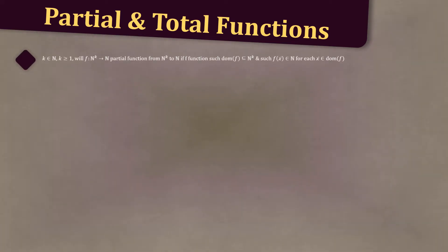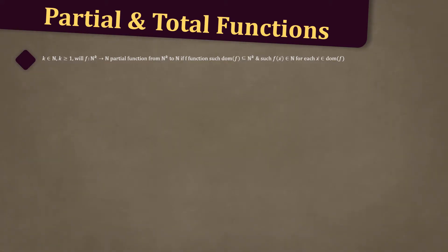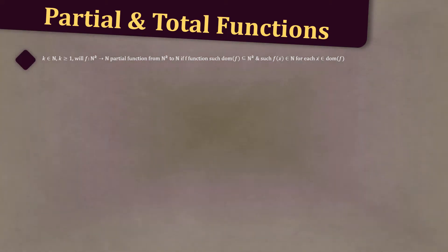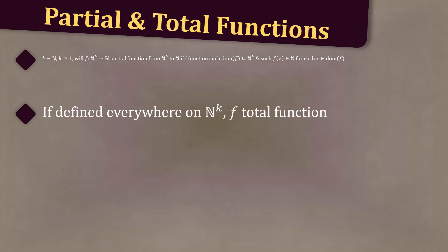Now let's discuss partial and total functions. Given K a natural number greater than 1, we say that F from the natural numbers to the power K to the natural numbers is a partial function if F is a function such that the domain of F is some subset of the natural numbers to the K, and F of X-bar is in the natural numbers for each X-bar in the domain of F. If it is defined everywhere on the natural numbers to the K, we say that F is a total function.